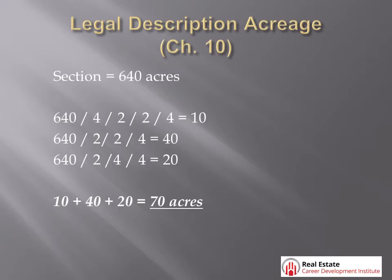When you add all three up, 10 plus 40 plus 20 equals 70 acres total in this legal description.